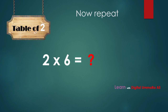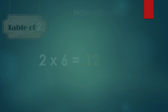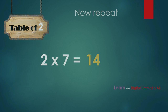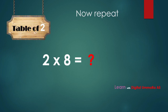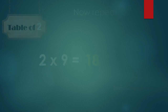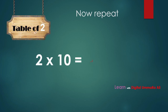Two sixes are... yes, you're right, two sixes are twelve. Two sevens are... tell me — two sevens are fourteen. Two eights are, think about it — two eights are sixteen. Now you have to tell me, two nines are... yes, two nines are eighteen. Two tens are — this is so simple — two tens are twenty.